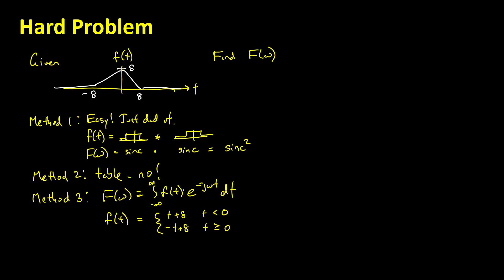We could do those, and it would be nasty because we'd have two integrals once we use the distributive property. One of those integrals would be a t times an e to the minus j omega t. We'd have to use integration by parts, and that would be painful. So let's look for another way.